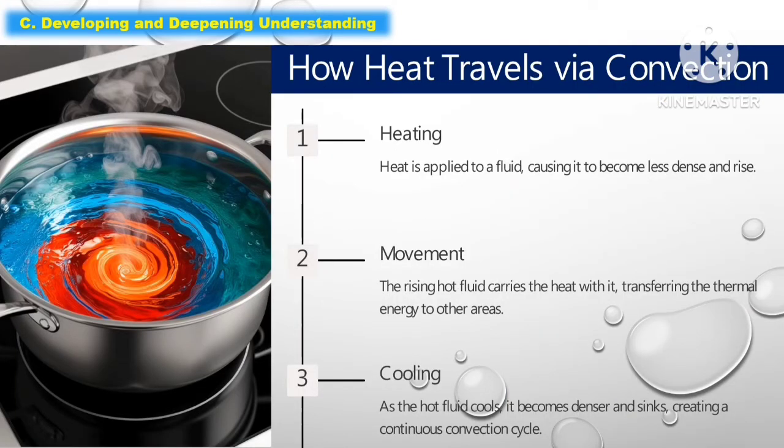Heat is applied to a fluid, causing it to become less dense and rise. The second step is movement — the rising hot fluid carries the heat with it, transferring thermal energy to other areas. The third step is cooling — as the hot fluid cools, it becomes denser and sinks, creating a continuous convection cycle.